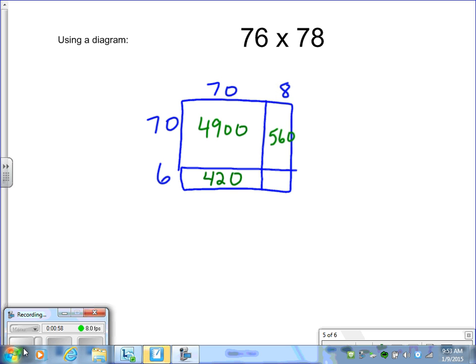6 times 8 is 48. Once you have all your products, take them, line up your place value, and add them together.